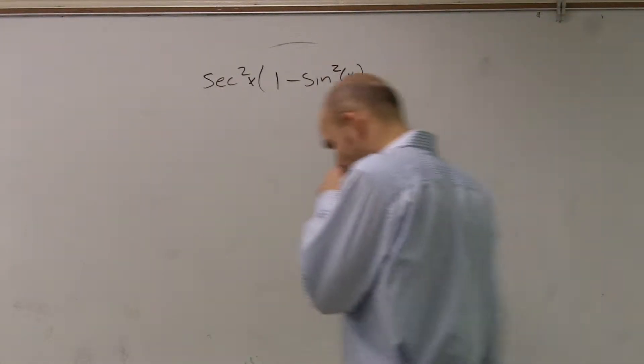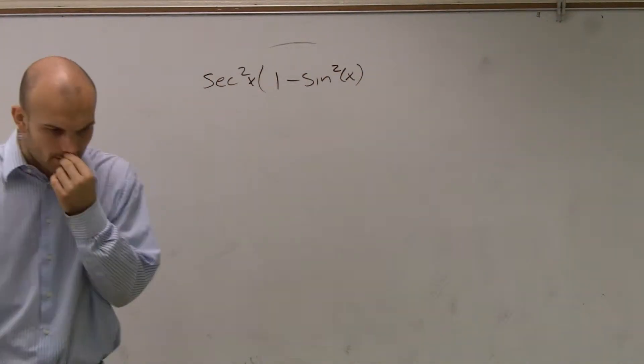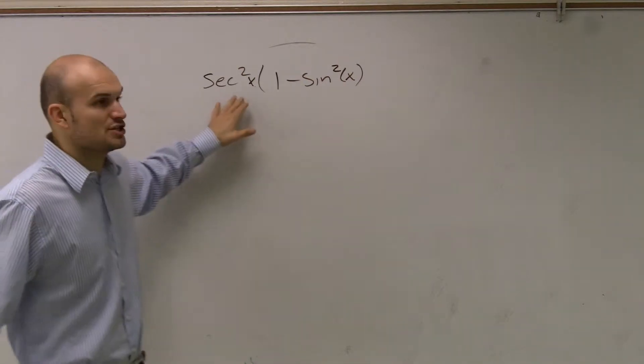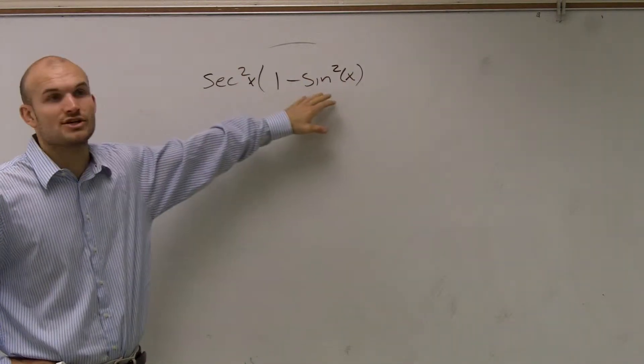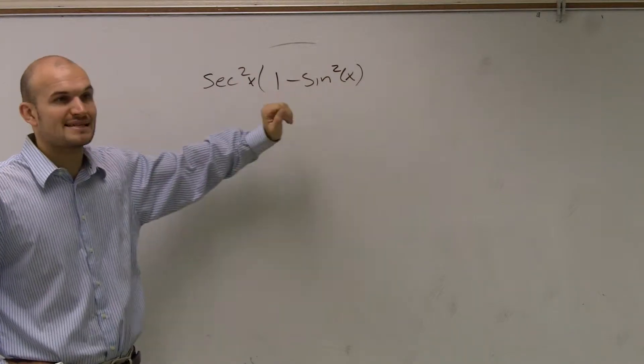So looking at this problem, I can do this two different ways. I can transform the secant squared using my Pythagorean identity, or I can transform my 1 minus sine squared.